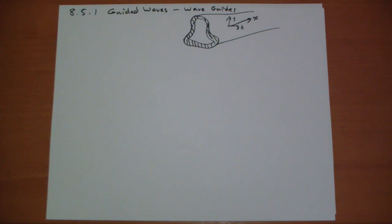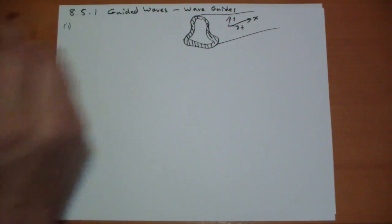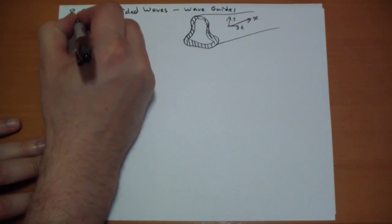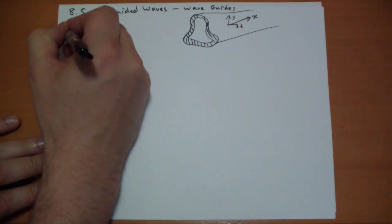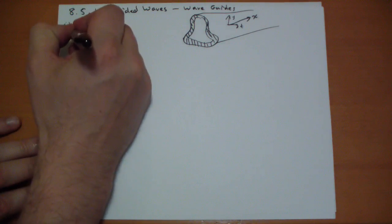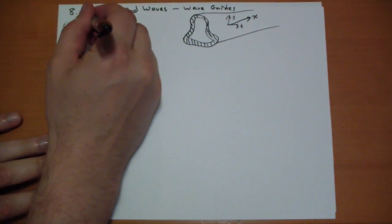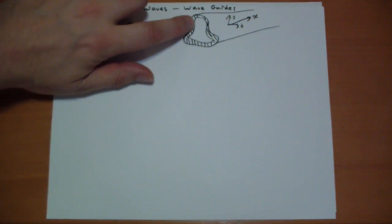That means the electric field inside the conductor is zero. And if the electric field is zero, then the magnetic field must be zero as well. Applying our boundary conditions, we determine that just inside the surface, the parallel electric field has to be zero — because inside the conductor the parallel electric field is zero. And the perpendicular B field just inside the surface is zero as well.